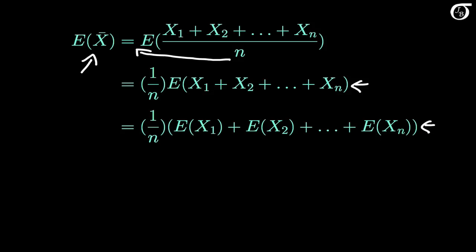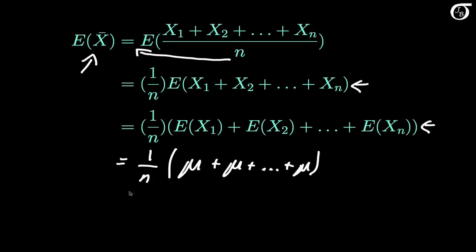But X1 through Xn all have the same expectation — just mu, the mean of the population from which we are sampling. So this becomes 1 over n times mu added n times, which is 1 over n times n times mu, or just mu.